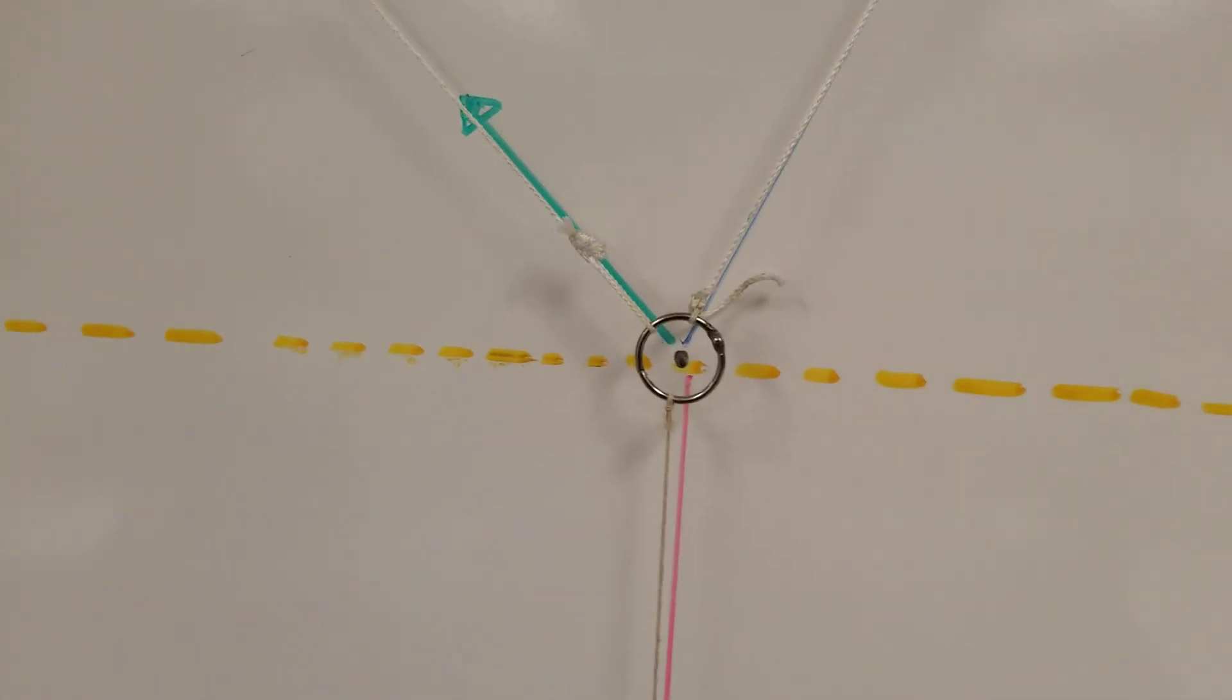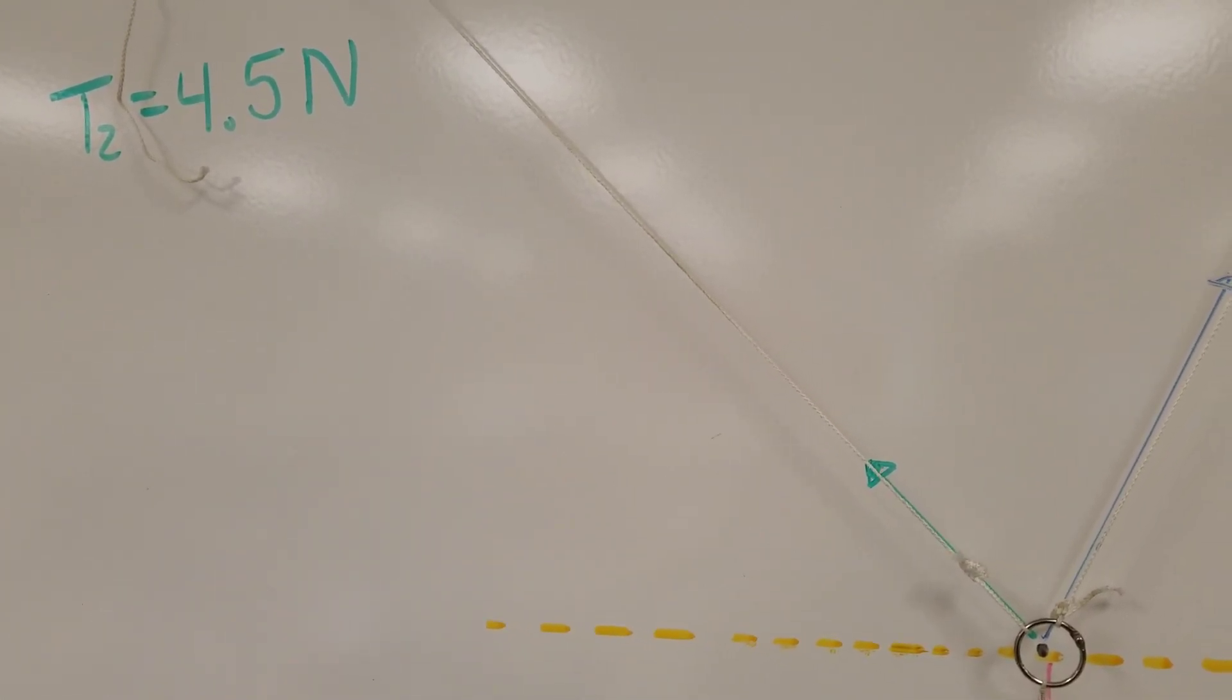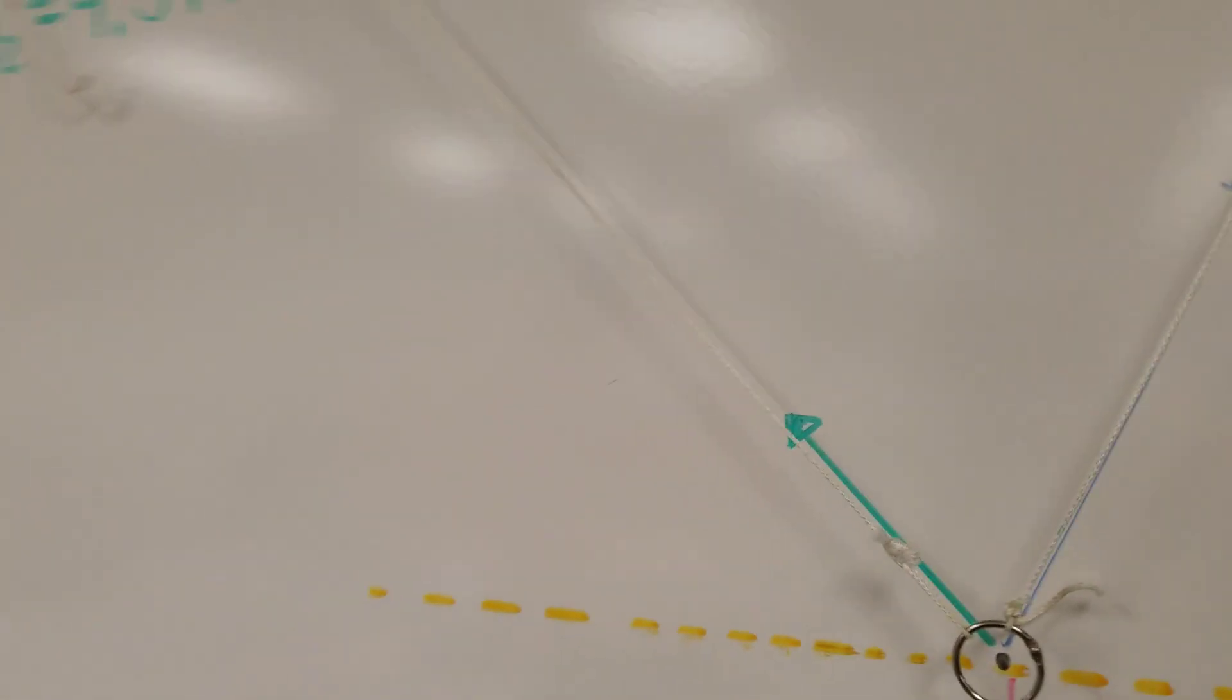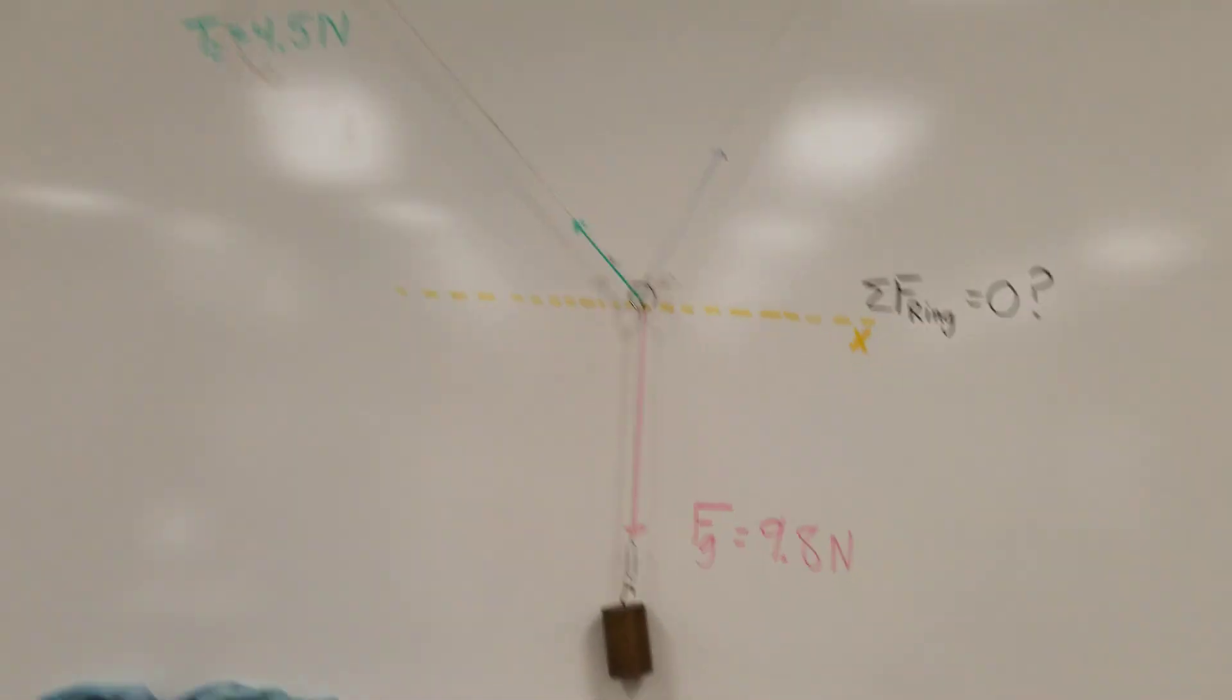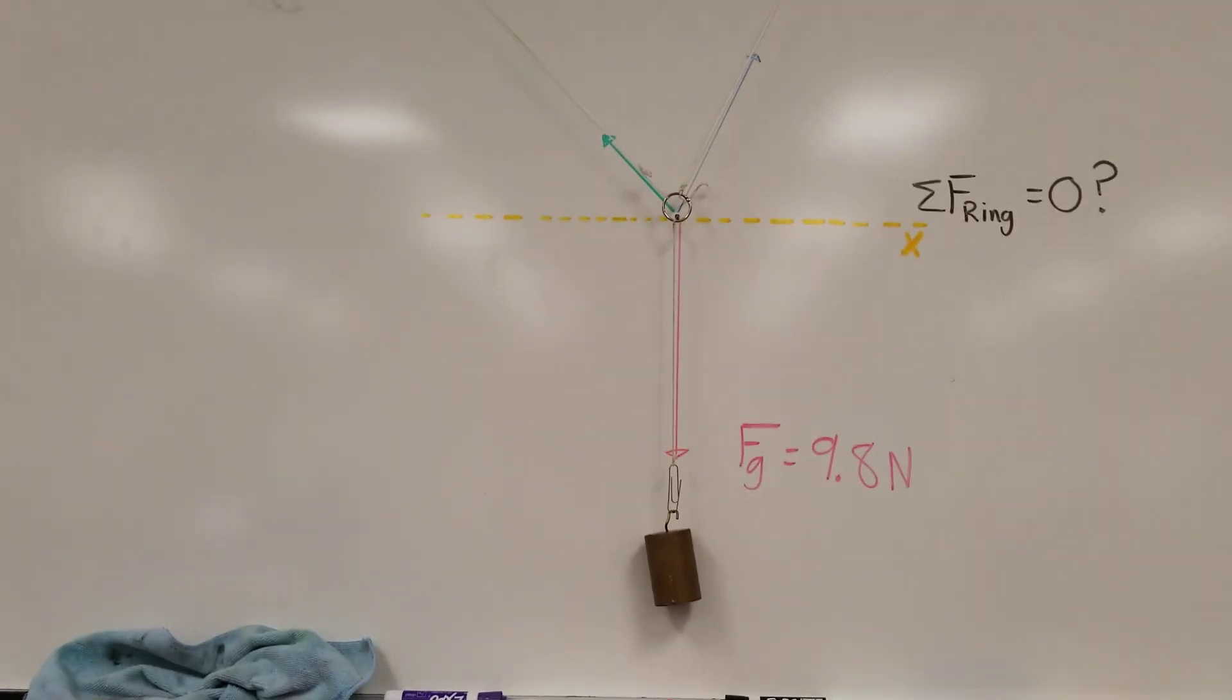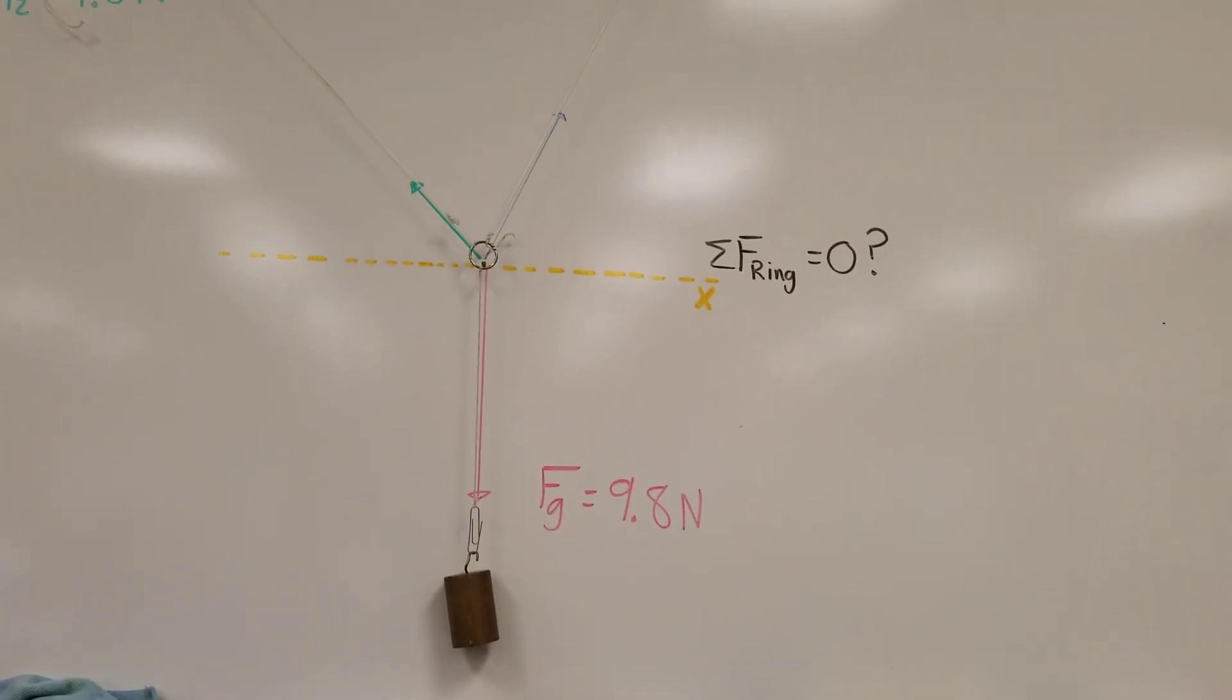And so the thing that we have to learn today is that that 7.3 Newtons is in two directions. It's going up and it's going to the right. And that 4.5 Newtons is also going in two directions, going up and to the left. So the new trick we're going to learn is how to resolve a vector into components. I'm going to move this back over here and leave you in the capable hands of Mr. Tripod.